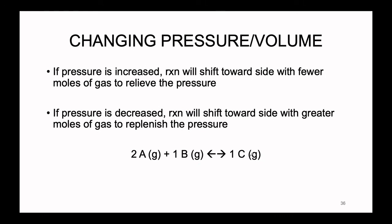That is how changing the concentration can distress a reversible reaction, and we can use the hot wheels analogy to predict how the change in concentration affects the overall reversible reaction. Now, not all reversible reactions take place in solution — some take place in gaseous form, and since gases are connected through the ideal gas law to pressure and volume, changing the pressure and volume of gaseous reversible reactions will also have an effect.